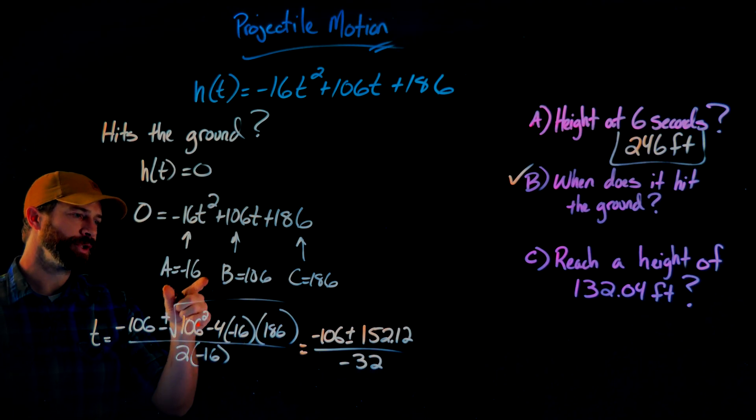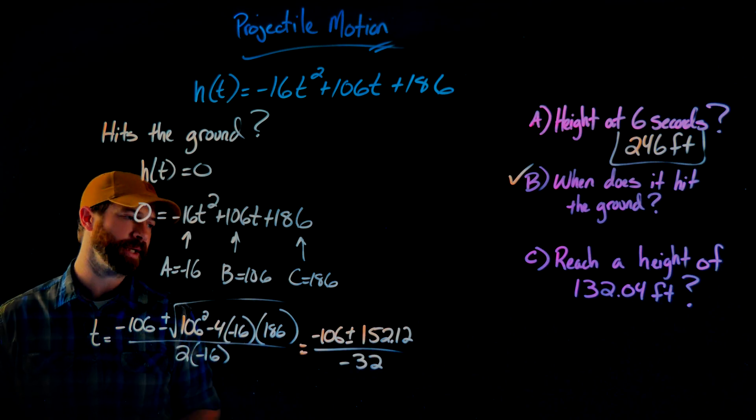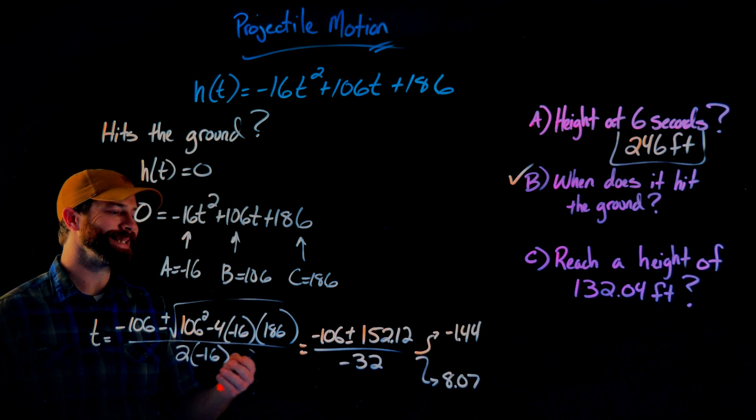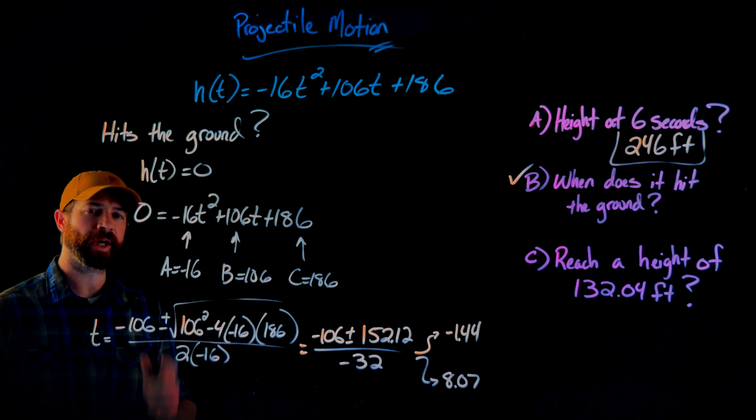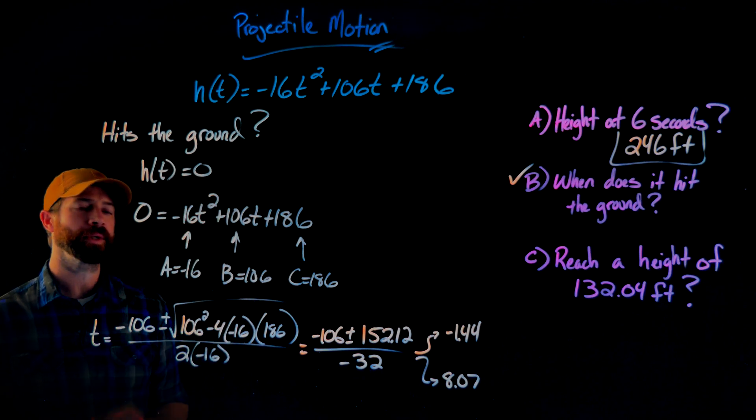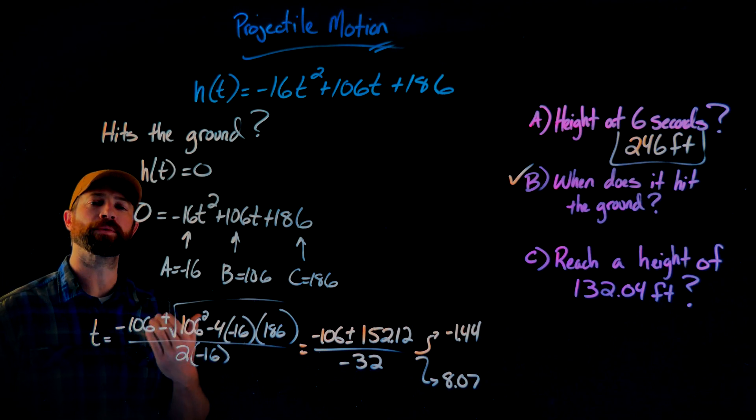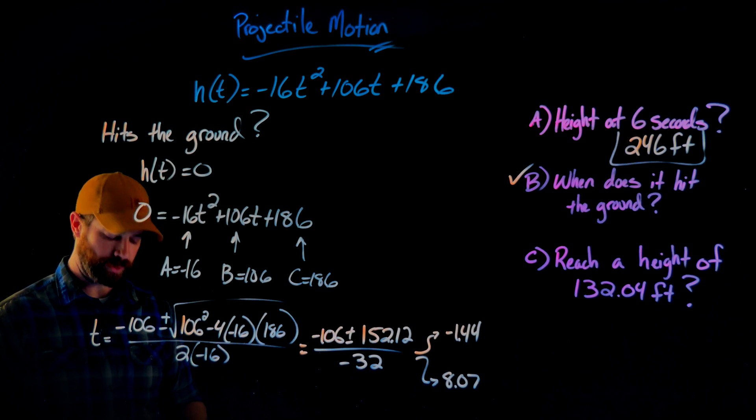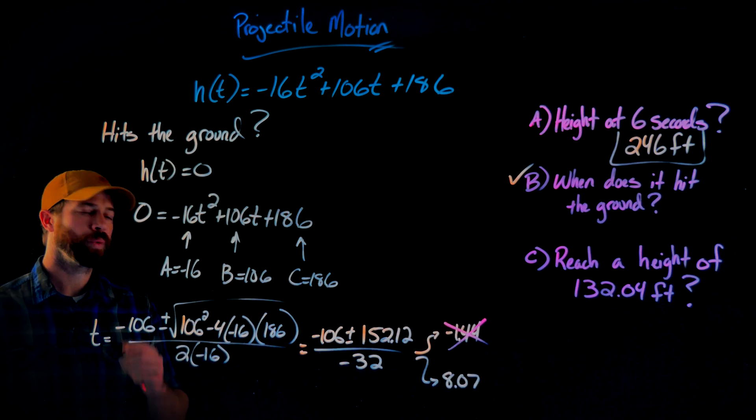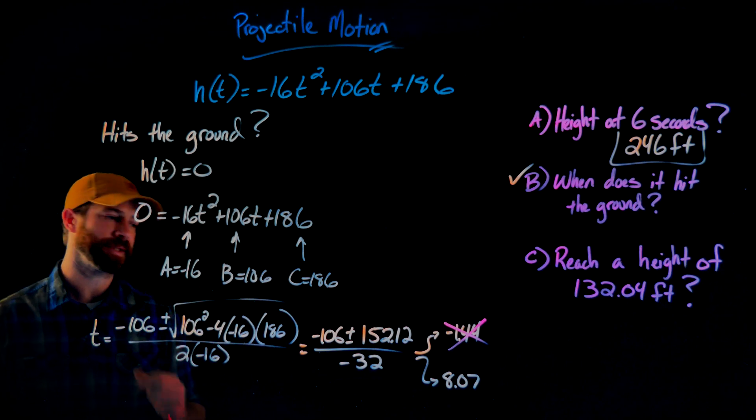Now I'll compute both of these values. This gives me two answers for this plus minus. Evaluating this gives me negative 1.44 and 8.07. What I'm solving for are the t values where my height is zero. In this context, time being negative does not make any sense. So I can get rid of the negative solution, which tells me that this object hits the ground 8.07 seconds after being launched.